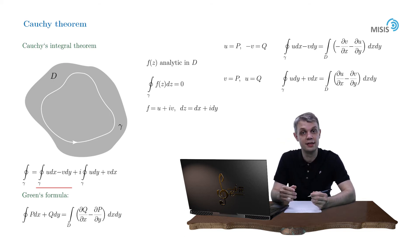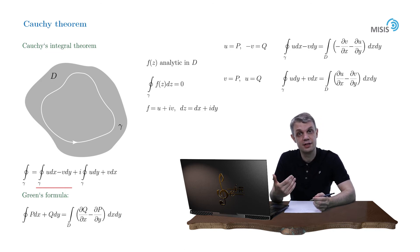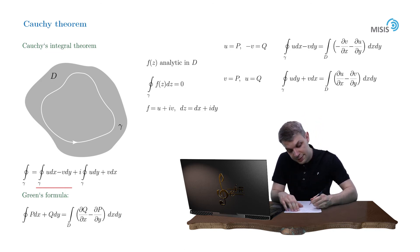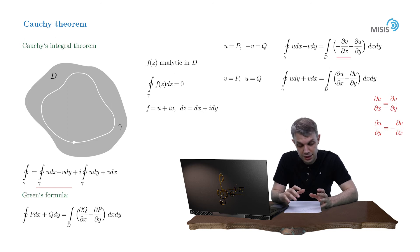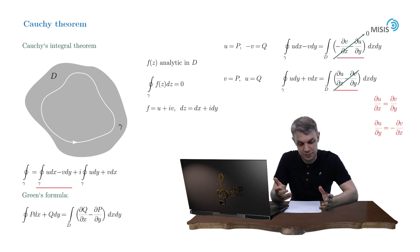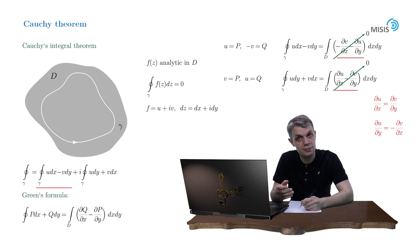Our function is analytic inside this contour, and that means it satisfies the Cauchy-Riemann conditions: ∂u/∂x equals ∂v/∂y, and ∂u/∂y equals minus ∂v/∂x. These are precisely the combinations we have in the brackets, and they vanish due to the Cauchy-Riemann conditions. And that's how we complete the proof of the Cauchy integral theorem.